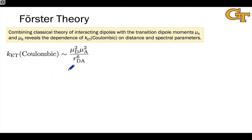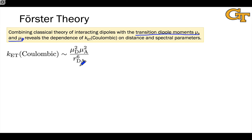Without getting too deep into Förster resonance energy transfer theory, the results of Förster theory are very important to understand the applications of FRET. We can combine the classical theory of interacting electrical dipoles with the idea of transition dipole moment associated with excitation. There is a transition dipole moment for the acceptor μ_A and a transition dipole moment for the donor μ_D. Combining the classical theory of interacting dipoles with these dipole moments shows how the rate of FRET depends on distance and the nature of the spectra of the donor and acceptor. The basic relation is that the rate of energy transfer is related to the square of each of the transition dipole moments, divided by the distance between the donor and acceptor to the sixth power.